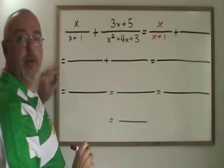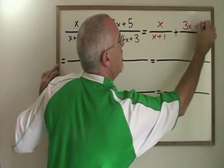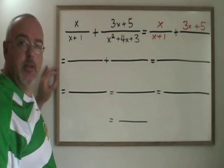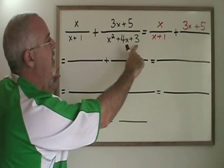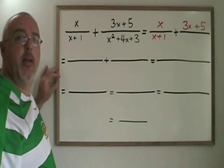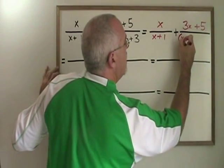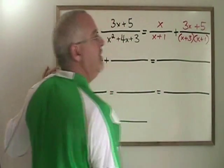The numerator over here also cannot be factored, but this is a simple trinomial. Using the simple trinomial method, we ask ourselves what two numbers multiply to give three and add to give four. They are three and one, so this factors to x plus three times x plus one.